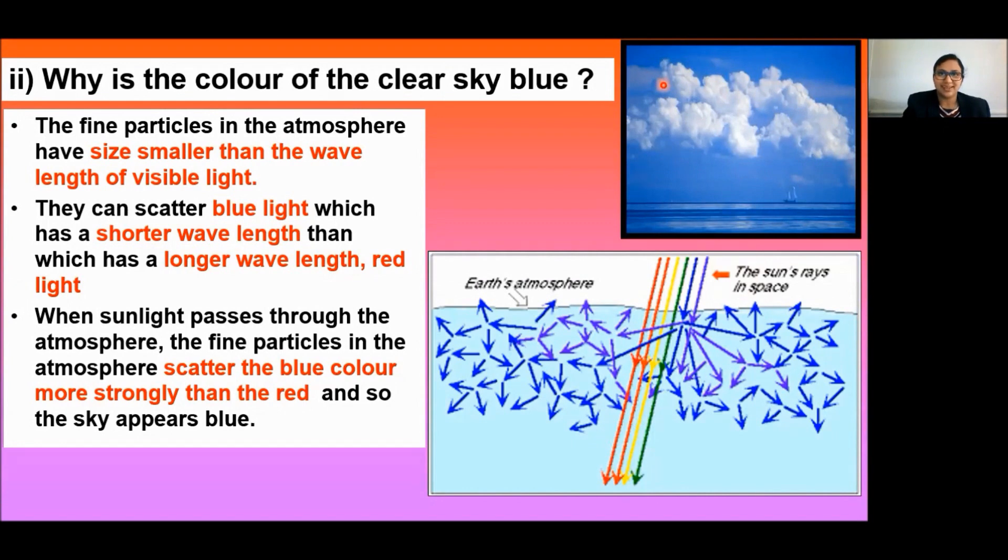You might have observed that the danger signals are red in color. Do you know why? Because red is least scattered by smoke or fog. Therefore, it can be seen in the same color at a distance.